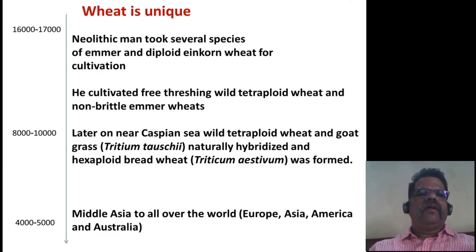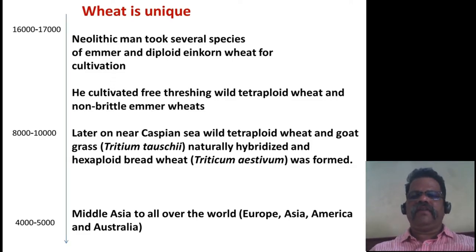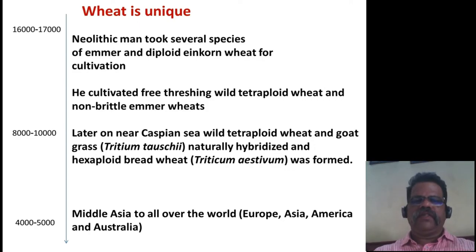Wheat was domesticated around 15,000 years ago in the fertile crescent in the Middle East. Cultivation of wild emmer and einkorn started early in the Neolithic period, around 16,000 years ago. Neolithic man took several species of emmer and diploid einkorn wheat for cultivation, including free-threshing wild tetraploid wheat and non-brittle emmer wheat. Later, near the Caspian Sea, wild tetraploid wheat and goat grass naturally hybridized to form polyploid hexaploid bread wheat, which began spreading worldwide from central Asia around 5,000 years ago.